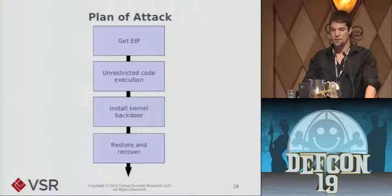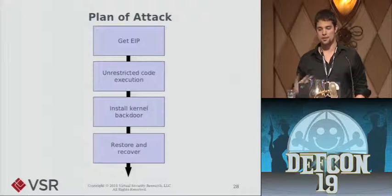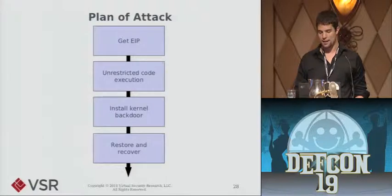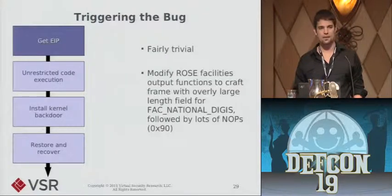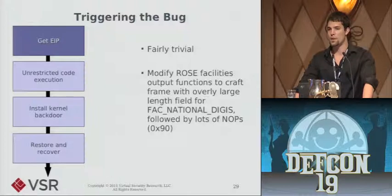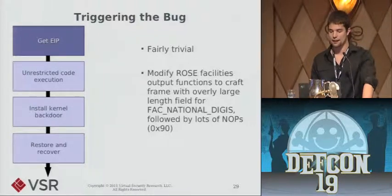Now we've got a plan of attack. We have a vulnerability and we want to exploit it. The first step is to gain control of the instruction pointer so we can control what the kernel is going to do. From that point we need to start executing code. I decided my exploit would install a remotely triggerable kernel backdoor — because that sounded like fun — and finally we need to do some cleanup to keep everything running. Triggering the bug was actually the easy part — took ten minutes after I found it. I essentially cannibalized the ROSE kernel module so that whenever I made a connection to someone, it would send out my evil ROSE frame instead of a normal one. This evil ROSE frame had the vulnerable facility field followed by a too-big length value and a bunch of NOP instructions just for testing.